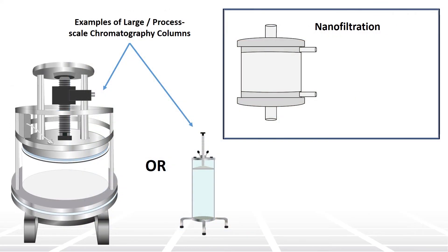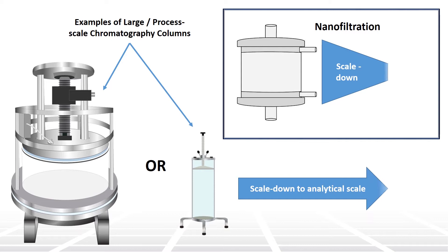It is impractical to perform the study on full-scale manufacturing steps due to the quantity of virus required and the expense. Thus, a scaled-down model that matches the full-scale operation needs to be developed and validated before spiking experiments are conducted.